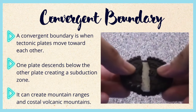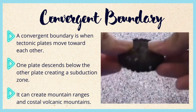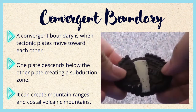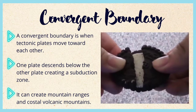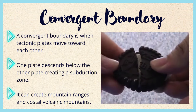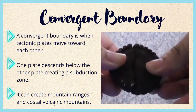A convergent boundary is when tectonic plates move toward each other. One plate descends below the other plate, creating a subduction zone. It can create mountain ranges and coastal volcanic mountains.